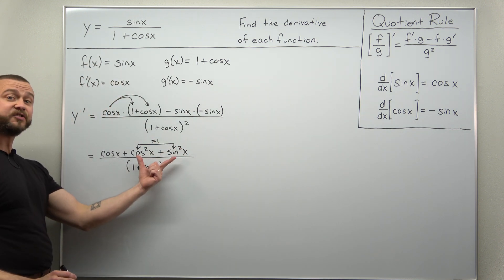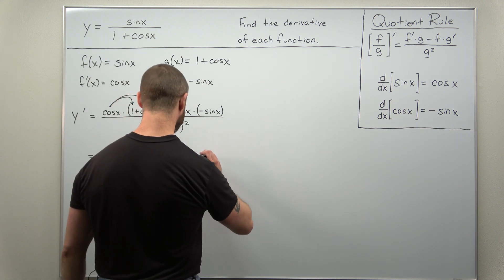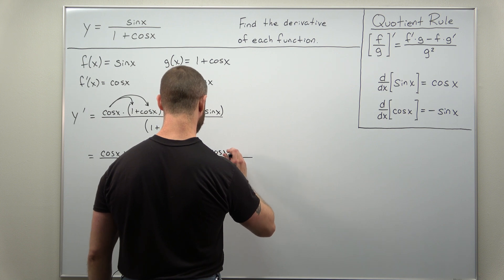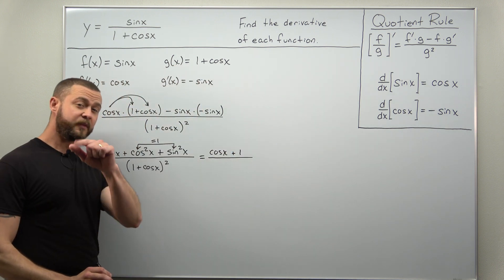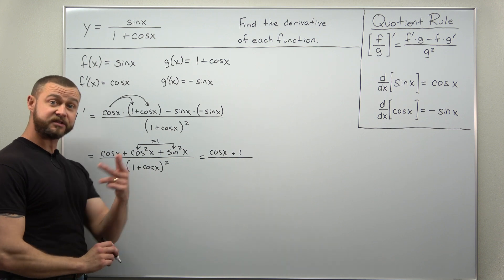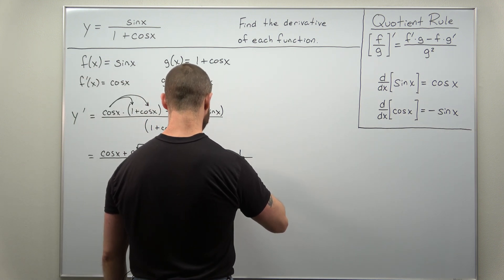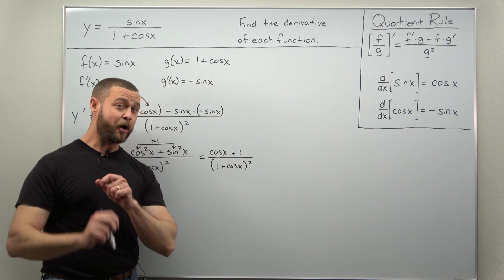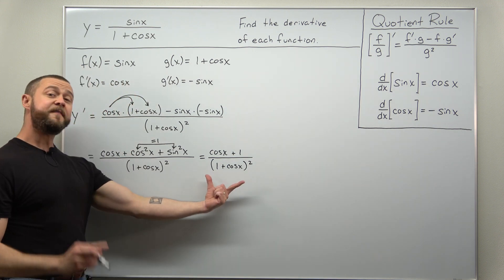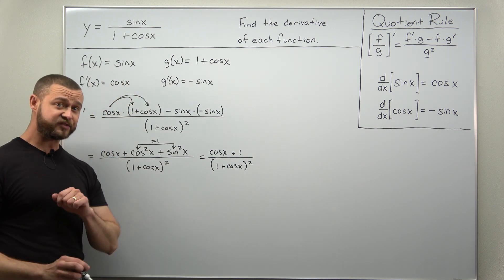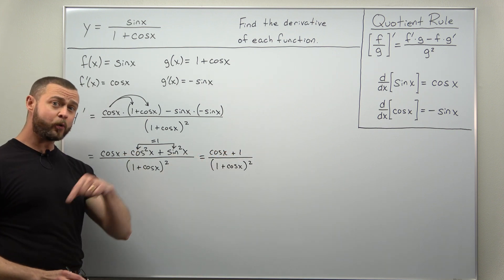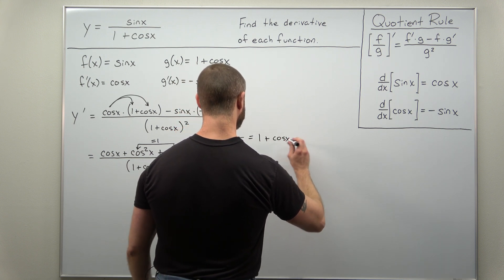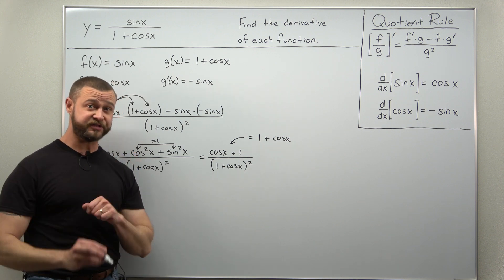And we're going to be able to rewrite those last two terms as 1. So we get in our numerator cosine of x plus 1 divided by 1 plus cosine of x squared. And now at this point we have a factor of 1 plus cosine of x that we can cancel out. Just make sure you see that here we can switch the order with addition and that numerator we can rewrite it if we want to as 1 plus cosine of x in case you don't see it.